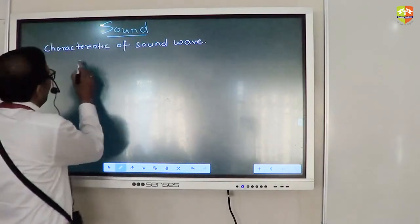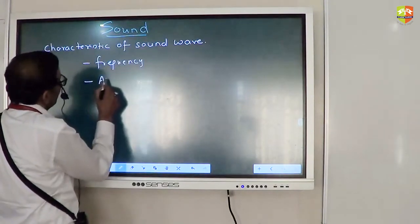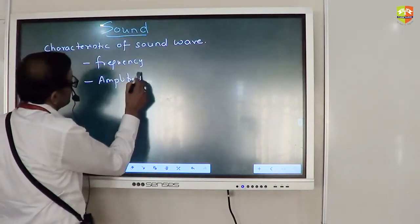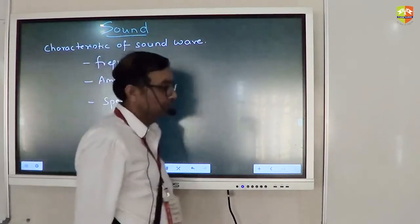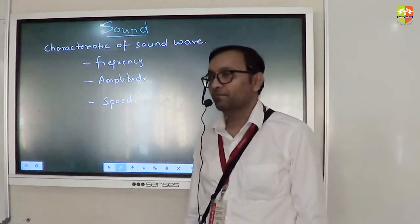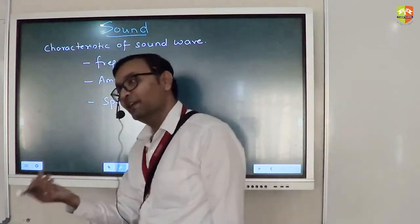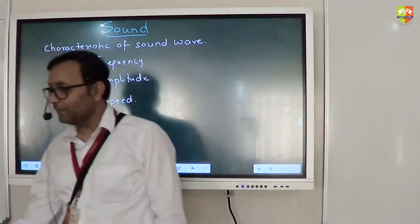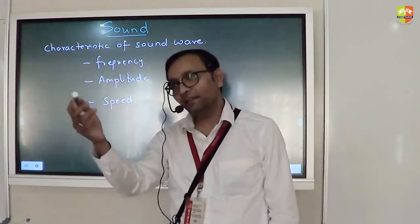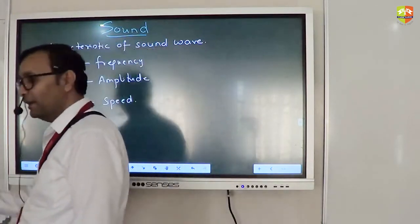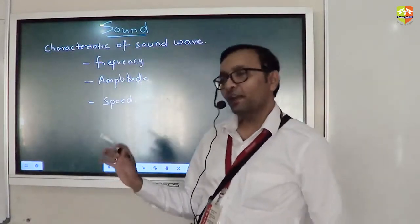Frequency, amplitude, and speed. If you tell me frequency, I can tell you time period — frequency is 1 divided by time period. If you know frequency and speed, they are related, so we will talk about that. Every other thing is related to each other.